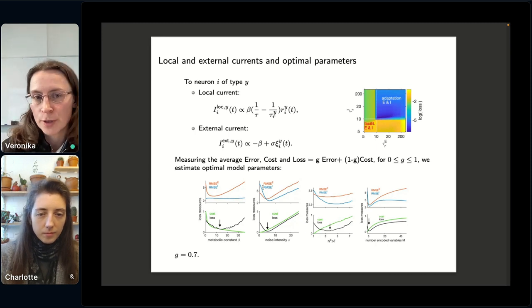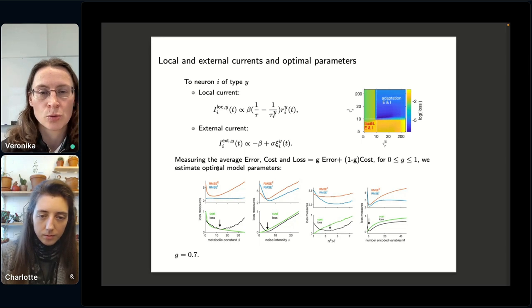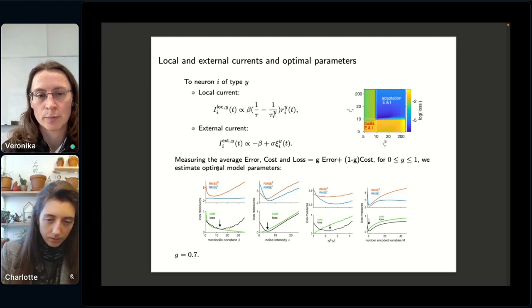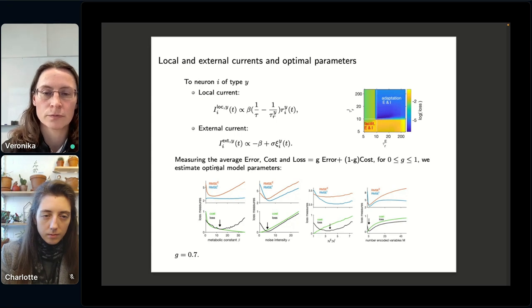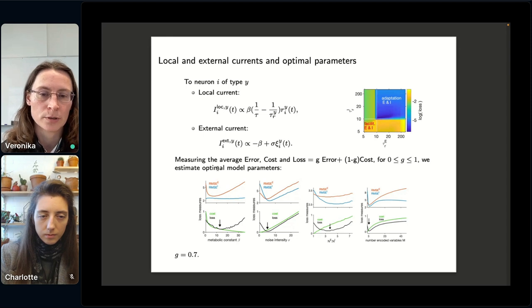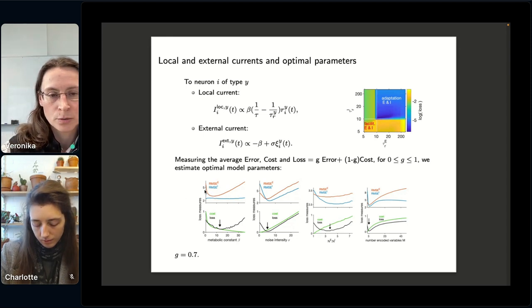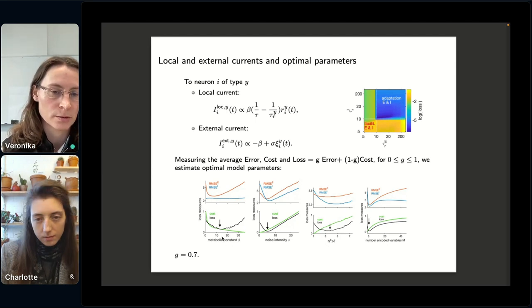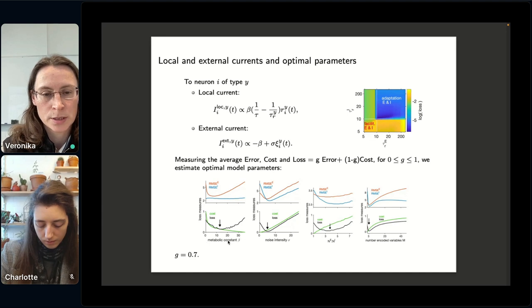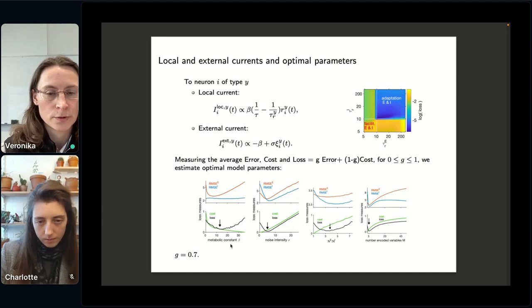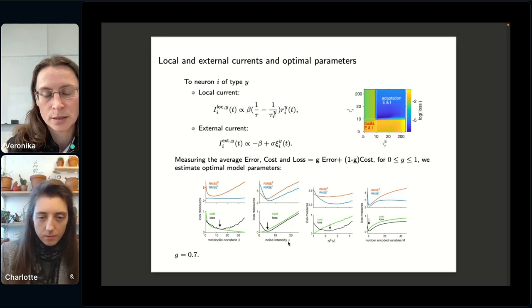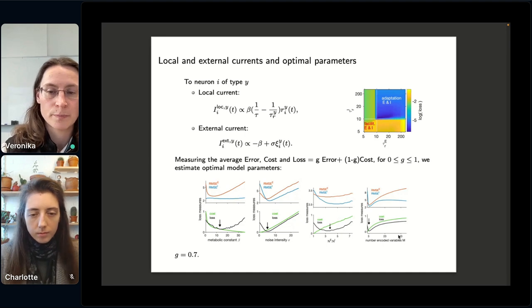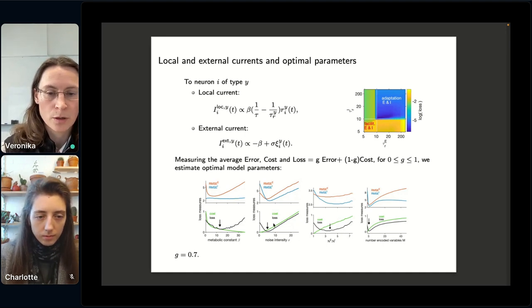But we have a bunch of free parameters of the model. So in order to constrain the model, what we do is to simulate the equations that we derived. And we measure the average error cost and the loss of the model. And then we look for parameters that minimize the loss. So here I plotted the loss measures for four different parameters, more as an illustration. So here are the loss measures as a function of the metabolic constant beta, noise intensity, this is the ratio of E to I neurons in the network, and this is the number of variables that we give to the network. So I will maybe comment on the noise.